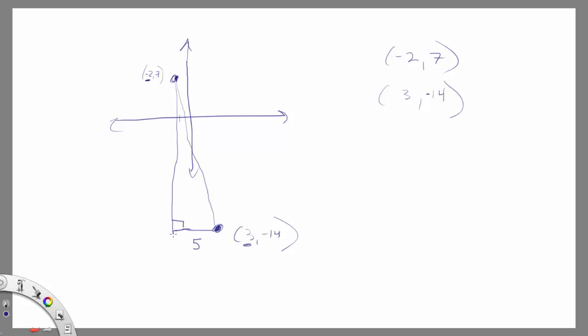Because notice we're going from -2 in the x direction to 3, and if you think about it, that is a total of 5 in the x direction. So this leg of the triangle is 5. What about the y direction? Well, we're going from 7 all the way down to -14.